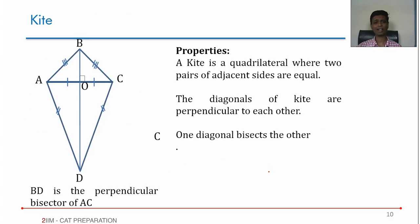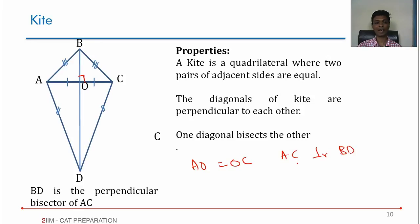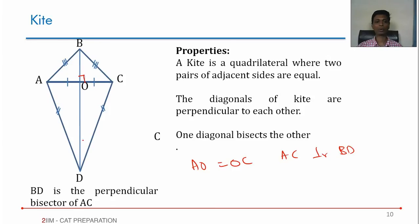A kite is a shape where pairs of adjacent sides are equal — these two are equal, and these two are equal. If you draw the diagonals of a kite, they will be perpendicular to each other and one diagonal will bisect the other. So AO equals OC, and AC is perpendicular to BD. AC will not bisect BD; if the diagonals were perpendicular bisectors of each other, it would become a rhombus. This is true because ABC is an isosceles triangle, so the perpendicular bisector of AC passes through B; and ACD is an isosceles triangle, so it also passes through D. Therefore BD is the perpendicular bisector of AC.